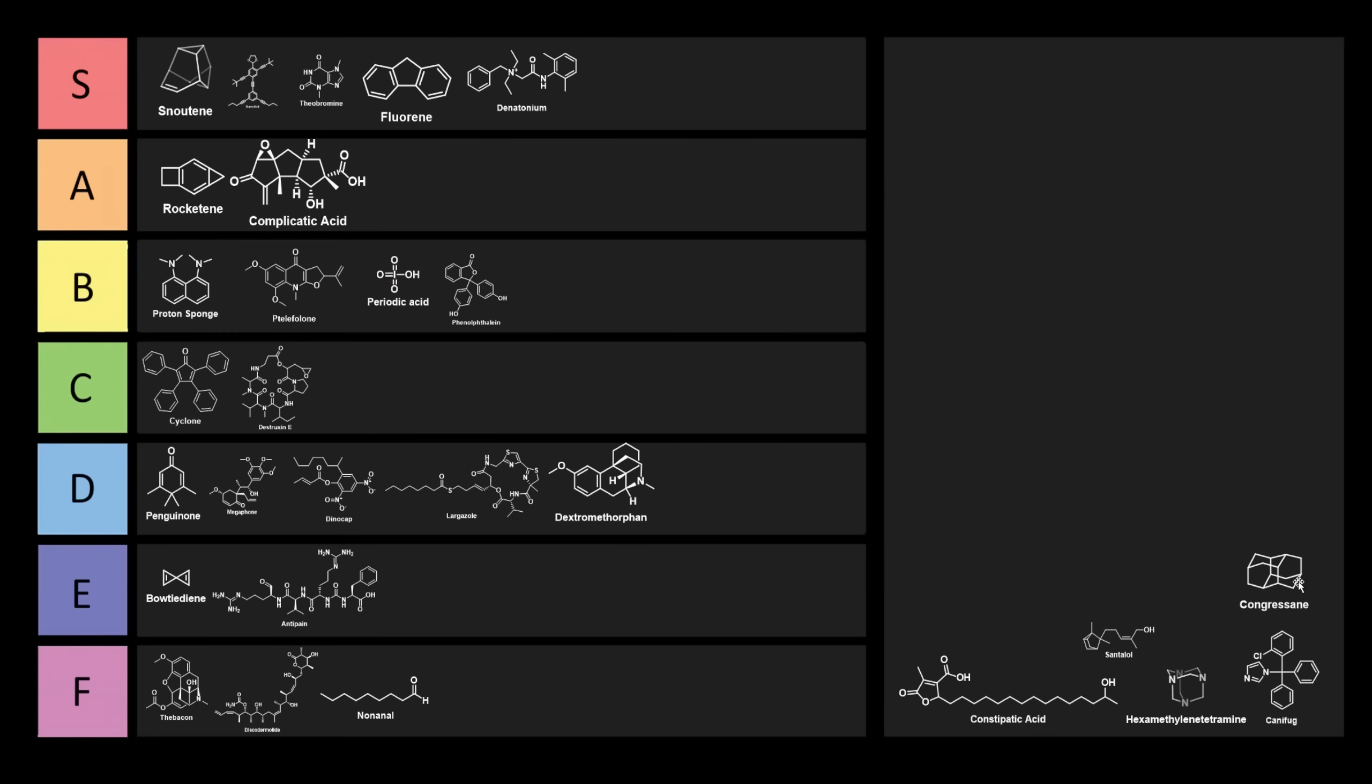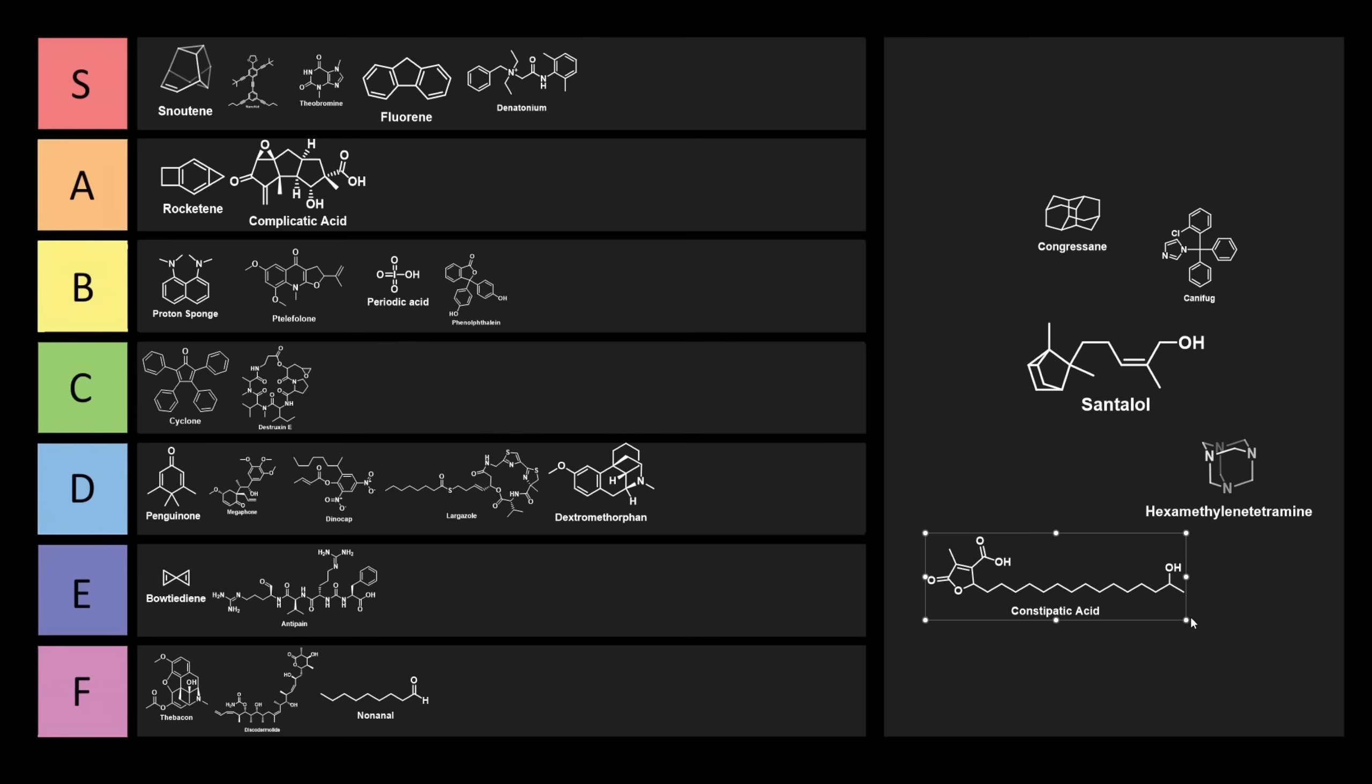So we have a few left here. We have congresane, canafug, santalol, hexamethylenetetramine, and constipatic acid. Why don't we talk about constipatic acid? Because the history of this one is quite amusing for me. Constipatic acid was extracted from the Australian leafy lichen called Xanthoparmelia constipata. Now, the funniest thing about this, if it wasn't just that it had been isolated from a lichen called constipata, it was collected on the schist boulders of West Springton, South Australia. So they dug this compound out of a lichen in schist boulders, which I thought was pretty funny. Constipatic acid, slightly amusing, a little bit annoying. Why don't we put this one into E tier?